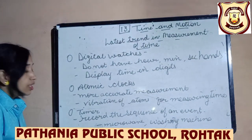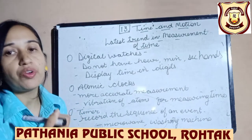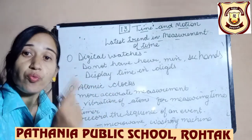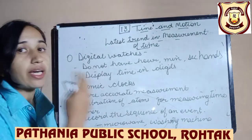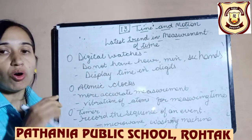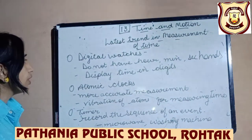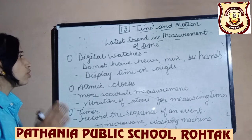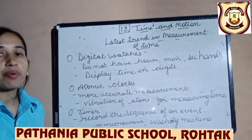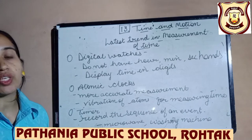One more type is timer machines — they record the sequence of events. For example, the timer on a washing machine, microwave, or air conditioner where we set the cooling timing. So we have covered three types: digital watches that we wear, atomic clocks that depend upon the vibration of atoms, and timer machines that record the sequence of events.